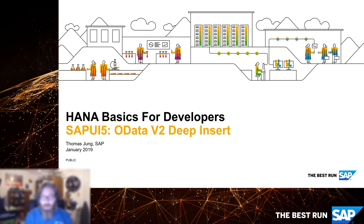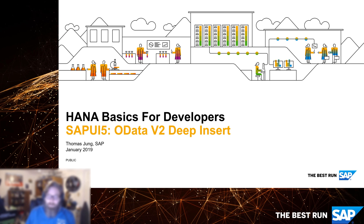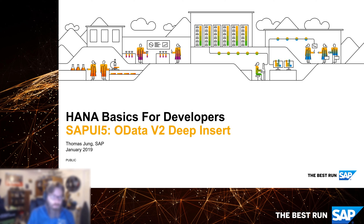For instance, I want to create both the purchase order header and the purchase order item, and I need to generate the unique ID for the purchase order header and then use that same key in the item so that they're associated. Even if we batch send them together using the technique from the previous video, that wouldn't necessarily guarantee they are associated with one another, because each record could be parallelized and processed independently on the server.